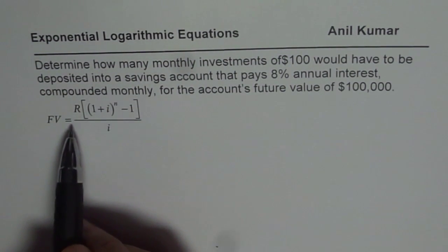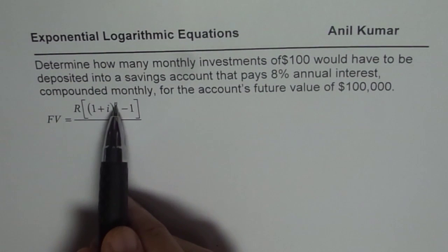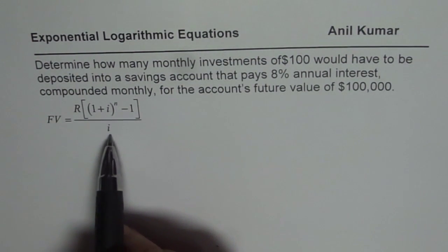For the account's future value of $100,000. We are also given the future value formula, which is FV = R(1+i)^n - 1 divided by i, where R is the monthly installments. We need to find what N is.